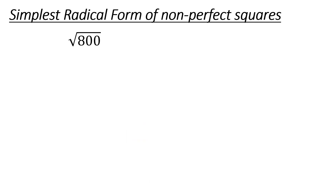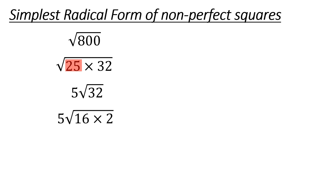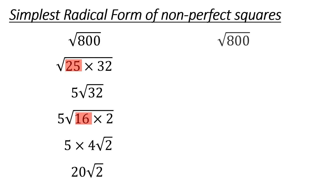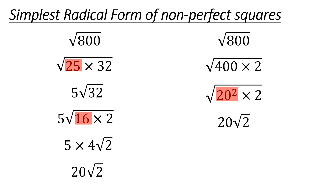Square root of 800. Some kids might see this as 25 times 32 — they see that 25 and realize it can come out front as a 5 because it's a perfect square. Then that 32 can be broken down to 16 times 2, and 16 is a perfect square, so it comes out as a 4. You already have that 5 out there, so you multiply those together, and your final answer is 20 times the square root of 2. Another way: you could realize that 800 is just 400 times 2, and 400 is a perfect square — 20 squared — so it comes out and you get there faster. Either way gets you there.